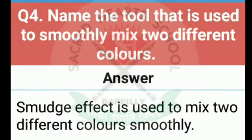Question number four: name the tool that is used to smoothly mix two different colors. Us tool ka naam batao jisko use karke hum two different colors ko smoothly mix kar lete hain. The answer is, smudge effect is used to mix two different colors smoothly.